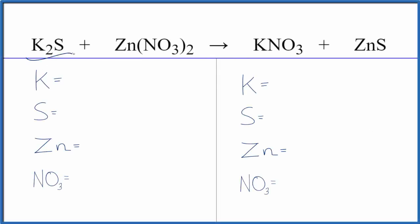Let's balance the equation for K₂S plus Zn(NO₃)₂. We have potassium sulfide and we have zinc nitrate.